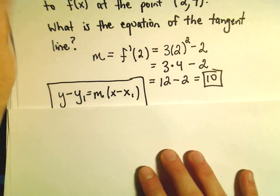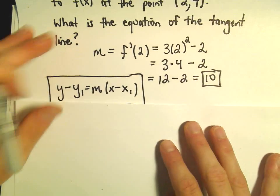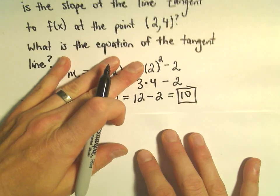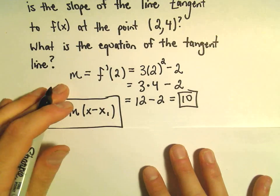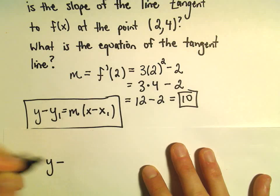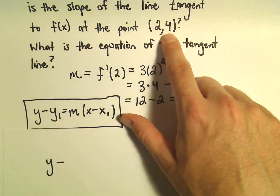Well, now all we have to do is just fill in our information. The point was given to us - we're given the point (2, 4). So if we fill that in, we'll just take y minus the y coordinate, which is 4.